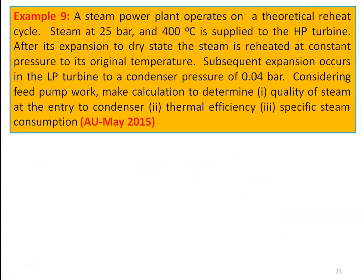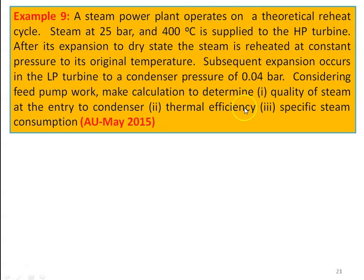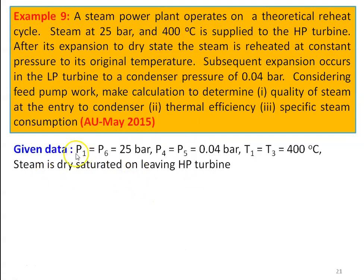We take the next example from the May 2015 question paper. A steam power plant operates on a theoretical reheat cycle. Steam at 25 bar and 400°C is supplied to a high pressure turbine. After expansion to a dry state, the steam is reheated at constant pressure to its original temperature. Subsequent expansion occurs in the LP turbine to a condenser pressure of 0.04 bar. Considering feed pump work, determine the quality of steam at the entry of the condenser, thermal efficiency, and specific steam consumption.